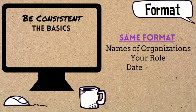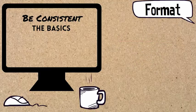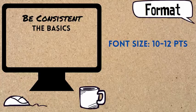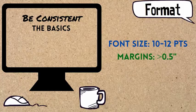Names of organizations, your role, date ranges—these should all look the same. Your font size should be between 10 to 12 points and your margins should be no less than half an inch around.